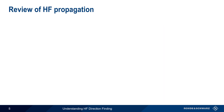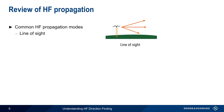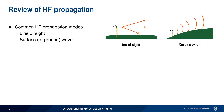In order to understand HF-DF, we first need to review HF propagation. There are three common HF propagation modes. The first, line-of-sight propagation, is exactly what the name implies: signals propagate from the antenna in a more or less straight line. HF signals can also follow the curvature of the Earth, commonly referred to as either surface wave or ground wave. Neither of these propagation modes poses any particular challenges for direction finding.